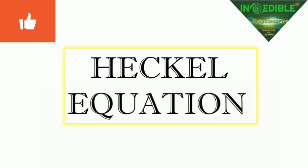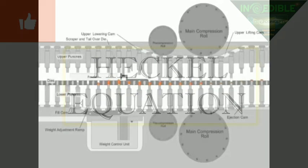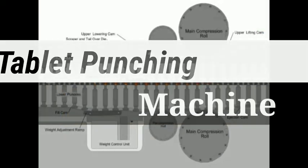You want to punch a tablet from powder by using direct compression method, and you're having a simple tablet punching machine. By using the tablet punching machine, you're going to punch a tablet from powder. So how does this punching process go on?